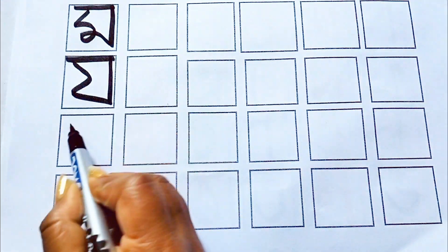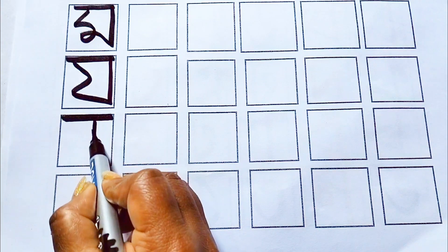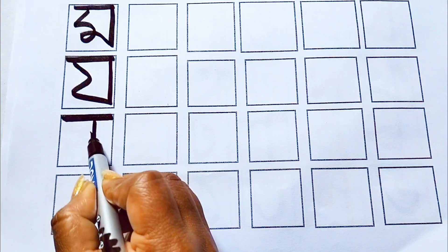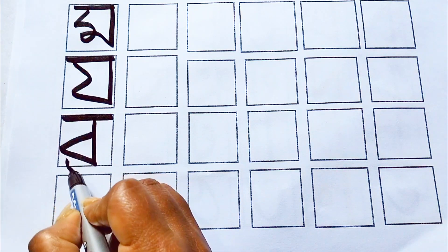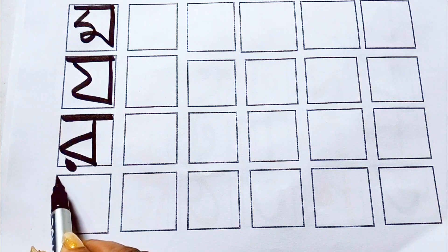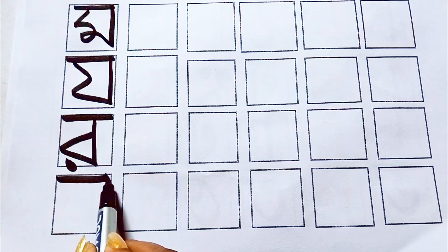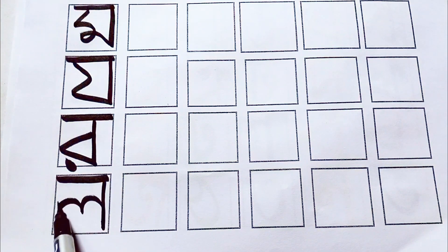जाता। बैसंदर, दे रंग धनो, बैसंदर, रैखाल ल, ल, ते ल, ब, ल, ता।